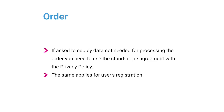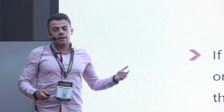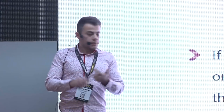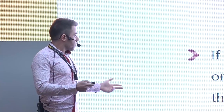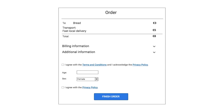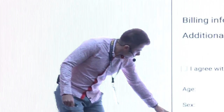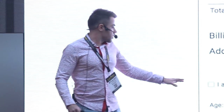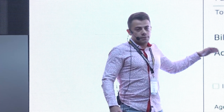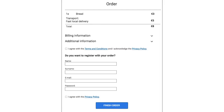If you ask for data that are not needed for order processing — like age, sex, or other data — you have to put that consent separately. So you have the standard order form, and then you add additional data fields like age and sex with a separate agreement with the privacy policy. You can't enforce it — meaning if the user completes the order but doesn't agree to that extra consent, you still have to save the order without those additional data fields.